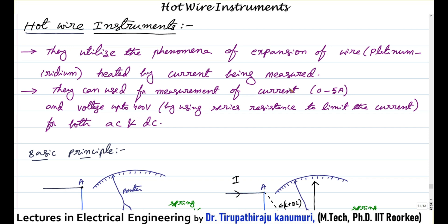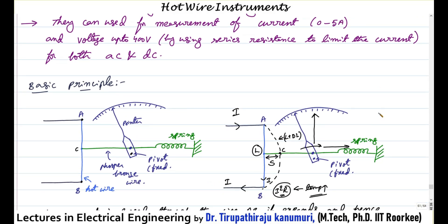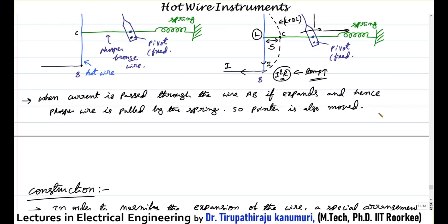Generally they are practically used mainly for current, very rarely for voltage. If you want to use for voltage, they can be used up to 400 volts, provided we connect some series resistance to limit the current. They can be used for both AC and DC because they mainly depend on the heating principle, proportional to current square, so they depend on the RMS value.